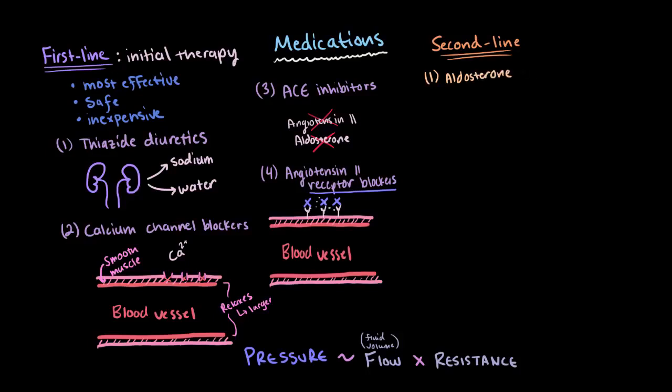First, you could have the aldosterone receptor blockers, which do pretty much exactly what their name suggests. They block the aldosterone receptors. Since aldosterone causes sodium and water retention, blocking these receptors will reduce your sodium and water retention and therefore reduce your blood volume and blood pressure.